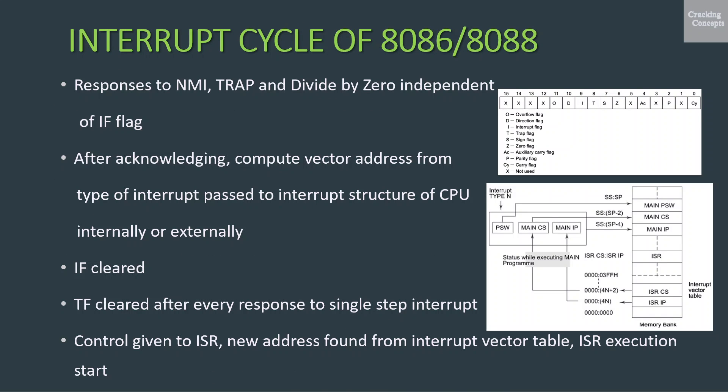Note that the responses to the NMI, trap, and divide-by-zero interrupt requests are independent of the interrupt flag. After an interrupt is acknowledged, the CPU computes the vector address from the type of interrupt, which may be passed to the interrupt structure of the CPU internally — as in case of software interrupts, NMI, trap, and divide-by-zero interrupts — or externally, that is from an interrupt controller in case of external interrupts.